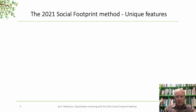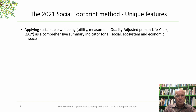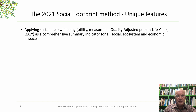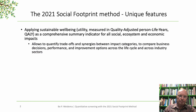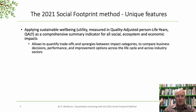The 2021 Social Footprint Method has a number of unique features. First of all, we apply sustainable well-being as a comprehensive summary indicator for all social, ecosystem, and economic impacts. We measure this in quality-adjusted personal life years, also known as QALYs, which is an expression of utility or well-being. This allows us to quantify the trade-offs and synergies between impact categories to compare business decisions, performance and improvement options across the product life cycle and across industry sectors.